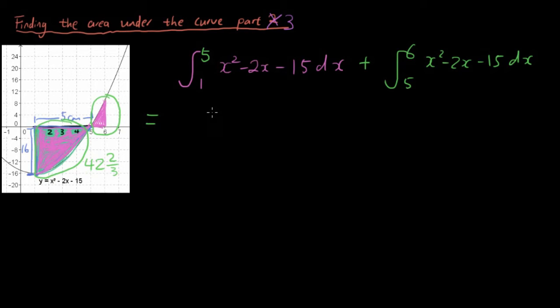We want to turn the bottom area into a positive first and then we combine with the top area. So let's do this again. We've already found previously in the last lesson that this section here is equal to -42⅔. This was from the previous lesson, and now we just need to find the area from x is 5 to x is 6.